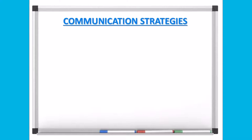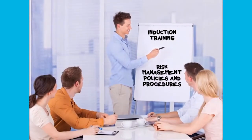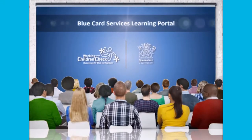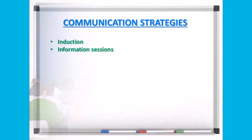In addition, you should consider strategies to ensure effective communication about your risk management strategy within your organization. For example, you might want to provide compulsory induction covering the risk management policies and procedures for all paid employees and volunteers, and deliver regular information sessions for people involved with your organization in relation to your risk management strategy. These could potentially be incorporated into other sessions you hold for staff and parents.